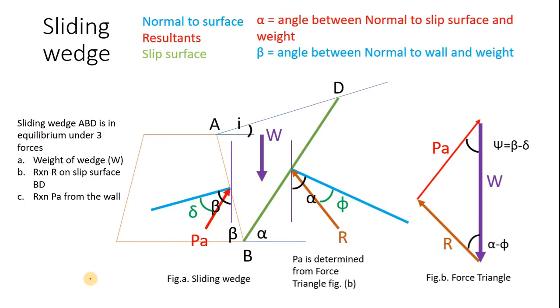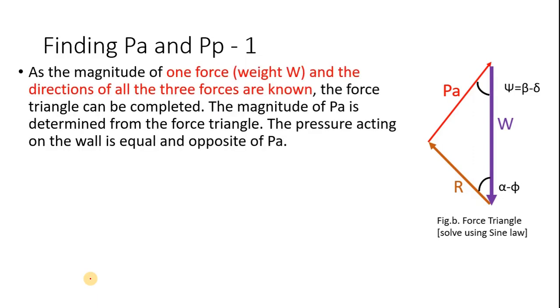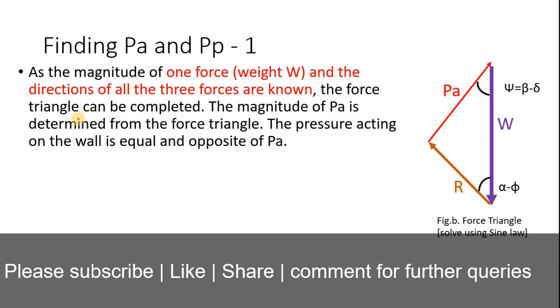PA is determined from the force triangle. As the magnitude of one force, weight, and directions of all three forces are known, the force triangle can be completed. The magnitude of PA is determined from the force triangle. The pressure acting on the wall is opposite to the PA.